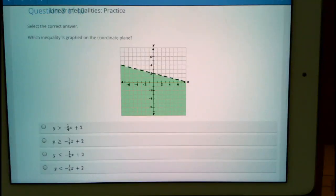Which inequality is graphed on the coordinate plane? So if we take a look at this here, what we see that's different from our previous video is that this one has a dashed or a dotted line.